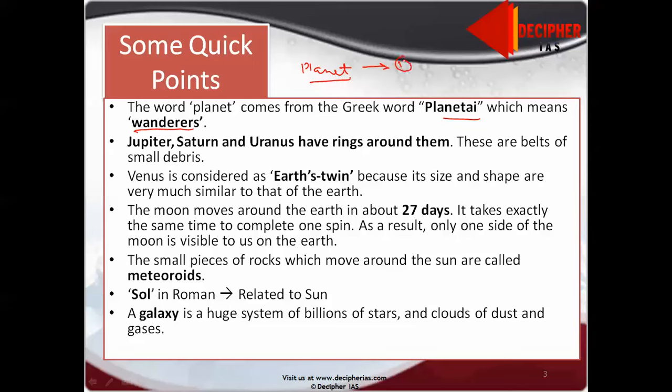It has to follow the following conditions to be called planet. One, encircle the Sun, that is, it orbits around the Sun. Second, it should clear all the objects in the orbit. Third, it should have enough mass so that gravity makes it spherical in shape.